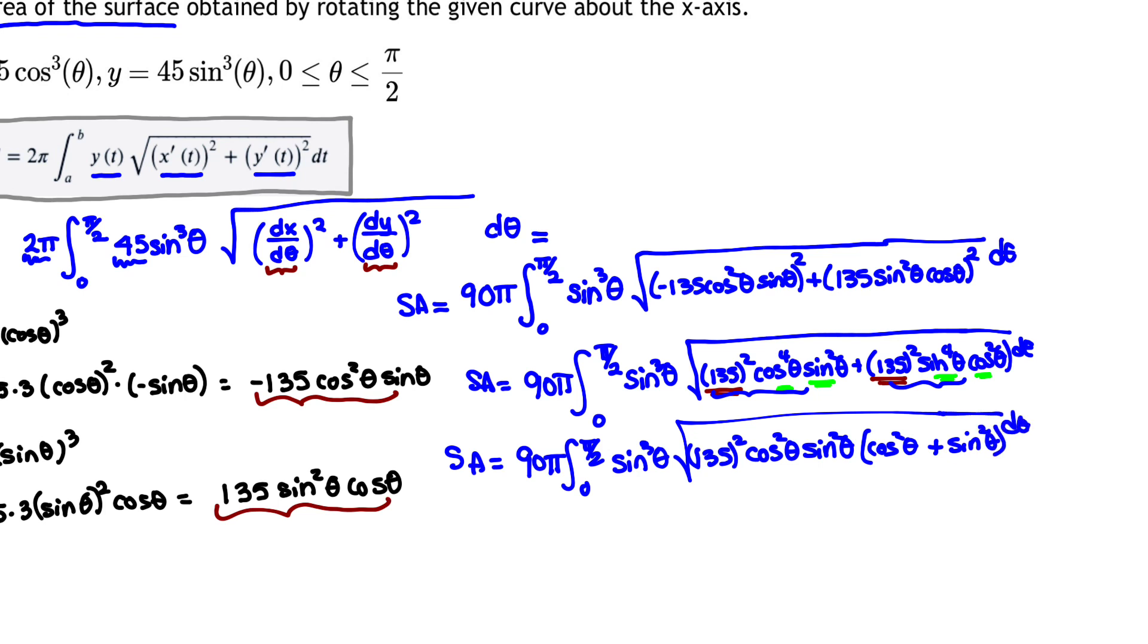That's going to leave me with the first term having an extra cos²θ, and the second term having an extra sin²θ. But that's beautiful, because we know our Pythagorean identity: cos²θ + sin²θ = 1. So our surface area is just 90π times the integral from 0 to π/2 of sin³θ times the square root of 135² cos²θ sin²θ, or just 135 cos θ sin θ.